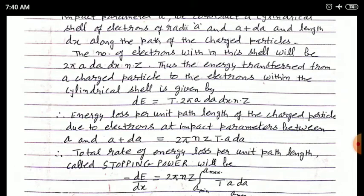The energy loss per unit path length of the charged particle due to electrons at impact parameters between a and a plus da is obtained by dividing dE by dx, giving: dE/dx equal to 2 pi n Z T a da. Therefore the total rate of energy loss per unit path length — called stopping power — is minus dE/dx equal to 2 pi n Z times the integral from a_min to a_max of T a da.